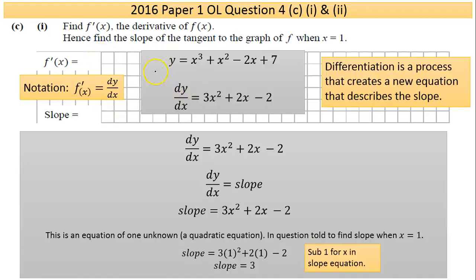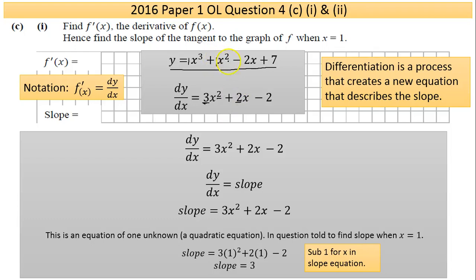For part C(i), I have my original equation and I'm finding dy/dx — equivalent to f'(x). Working left to right: for the first term, multiply the power by the coefficient — three times one is three — and reduce the power by one, giving 3x². For the second term, two times one is two, and two minus one is one, giving 2x.